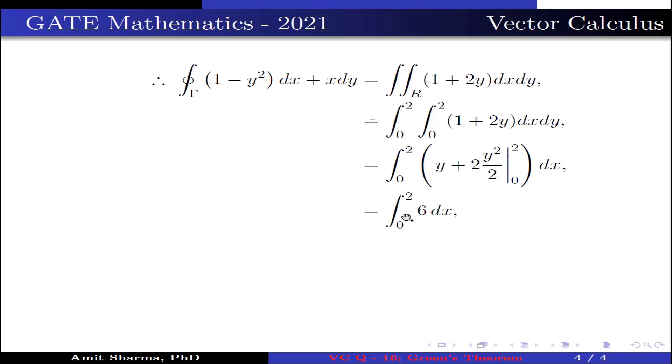Here lower limit is 0 and upper limit is 2. Now substituting the limit, we get integration from 0 to 2, 6 dx, which is further written as 6x, here lower limit is 0 and upper limit is 2. Now substituting the limit, we get 12.